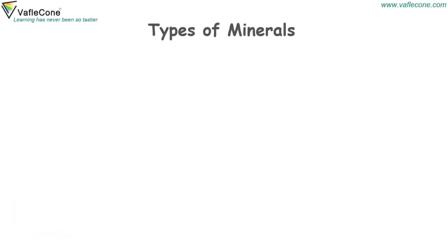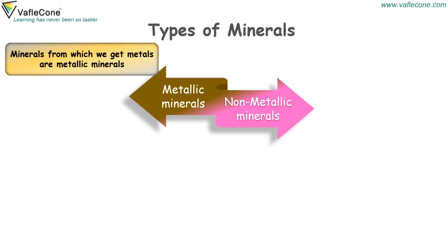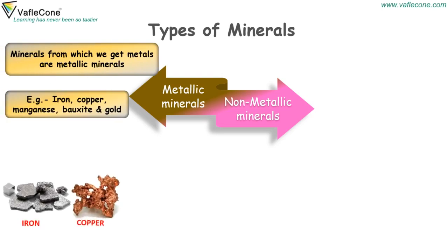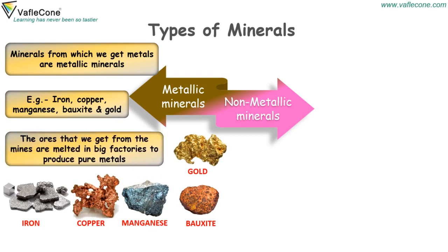Types of minerals. Minerals are of two types: metallic minerals and non-metallic minerals. Minerals from which we get metals are called metallic minerals. For example, iron, copper, manganese, bauxite and gold. The ores that we get from the mines are melted in big factories to produce pure metals.